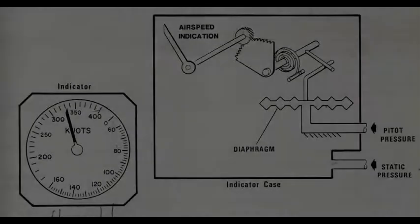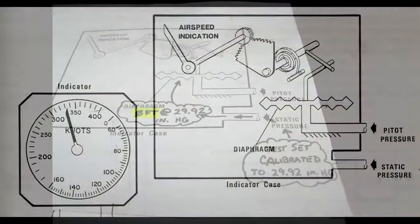Moving on, let's test the airspeed indicator. Remember we need both pitot and static pressure. Follow the static system setup we just discussed. Then enter an elevation of 0 feet.